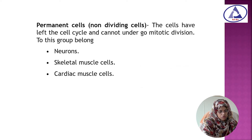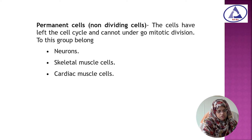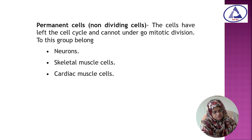Now, what are the permanent cells? Permanent cells are also called non-dividing cells. These cells have left the cell cycle and cannot undergo mitotic division. This group includes neurons, skeletal muscle cells, and cardiac muscle cells.